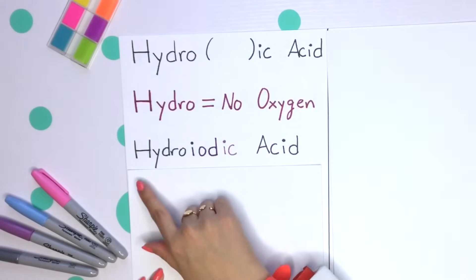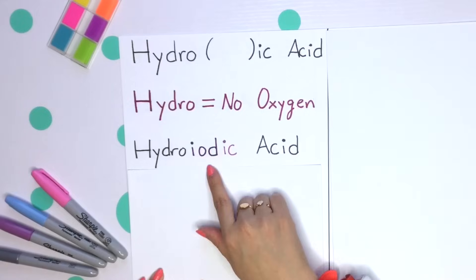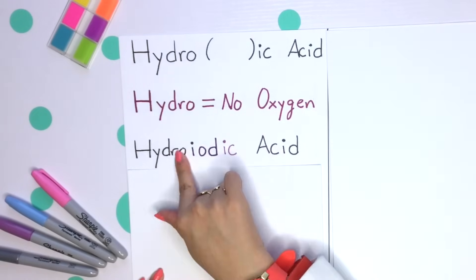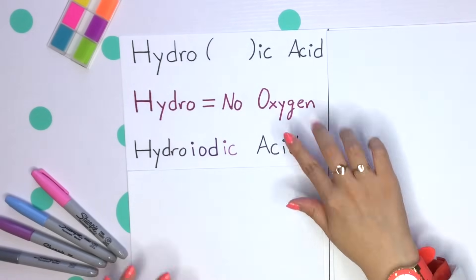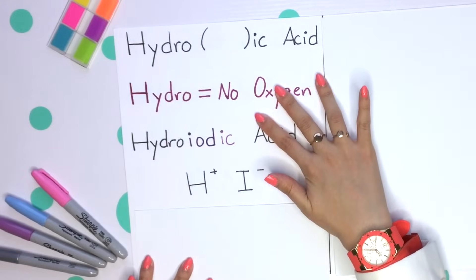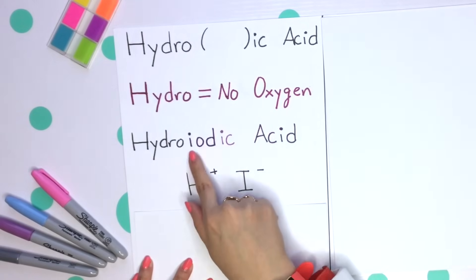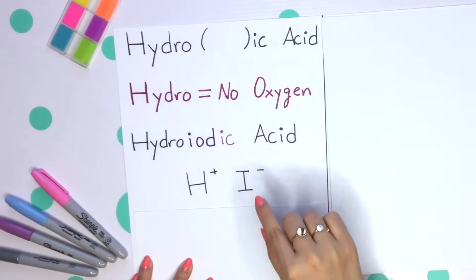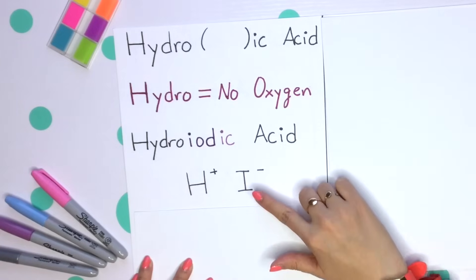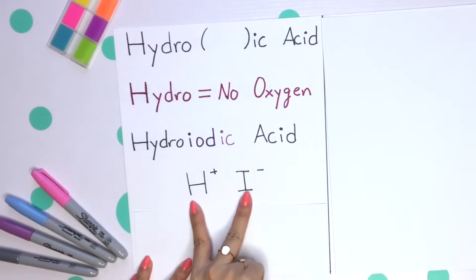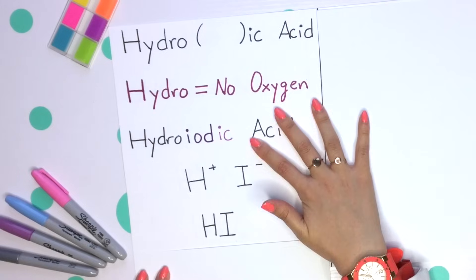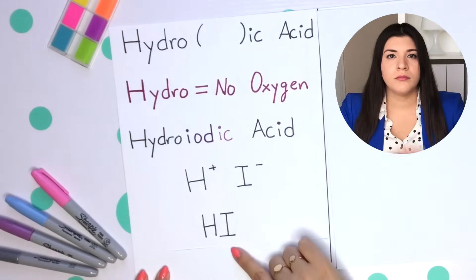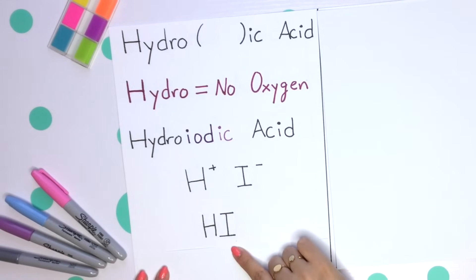For example, hydroiodic acid. Hydro tells us no oxygen. The acid portion tells us there's a hydrogen in front, and iod tells us the root name of our element — iodine. Balance out your charges and we get HI, or hydroiodic acid.